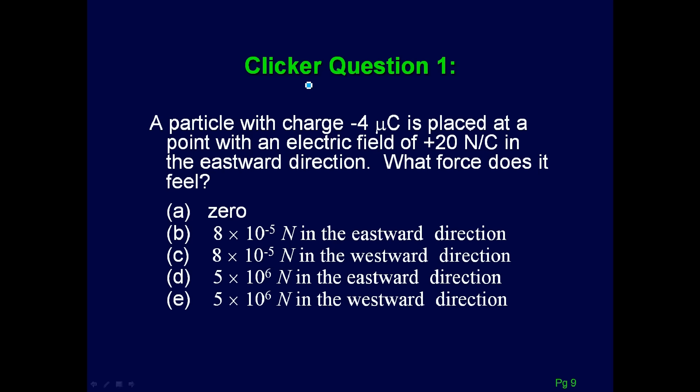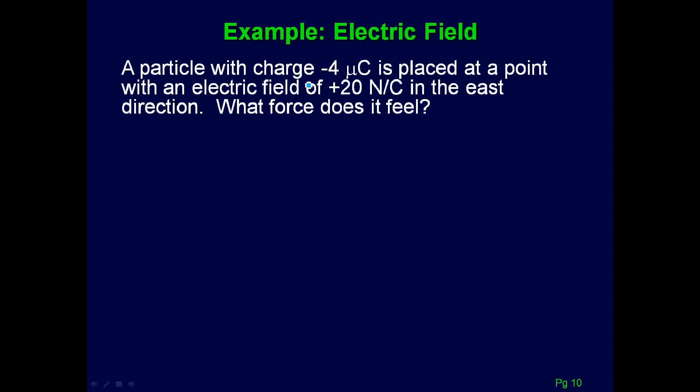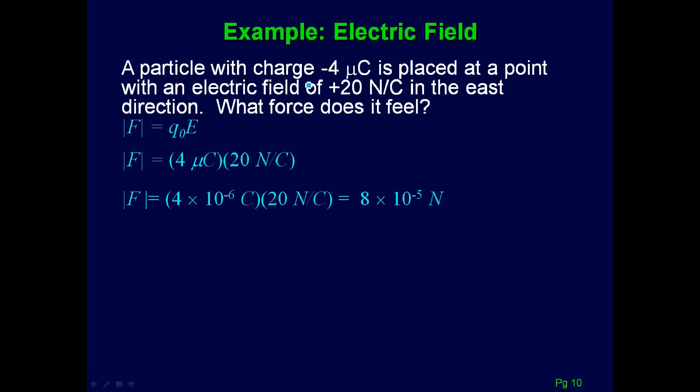Let's try an example. A particle with charge negative 4 microcoulombs is placed at a point with an electric field of 20 newtons per coulomb pointing in the eastward direction. What force does it feel? I got choice C. The actual number isn't too hard to calculate once you know the electric field — you take the charge, and since we're doing the absolute value, I don't worry about the negative sign. I use the negative when finding the direction.